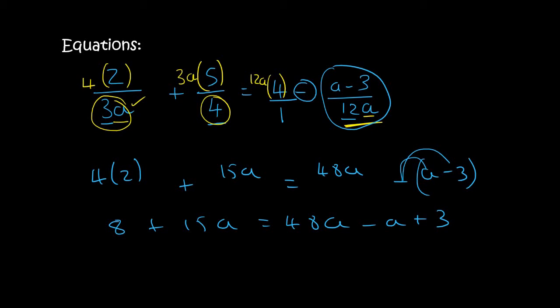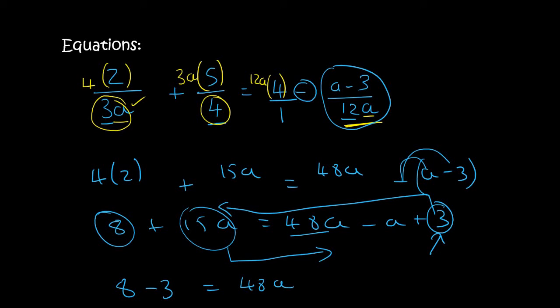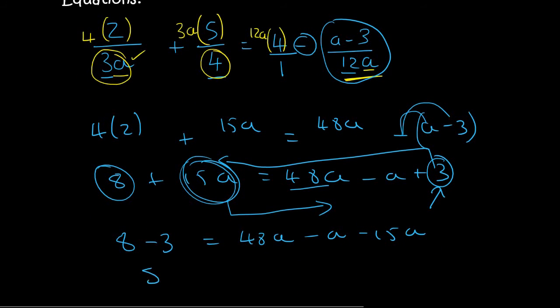Then you would solve for a. In this one, I'm actually going to take all the a's to the right and all the numbers to the left. But Kevin, why? It doesn't matter, guys. You can do it however, you will get to the same answer. So on the left, we've already got 8, and then I'm going to bring this 3 over, so it becomes minus 3. Here I've got 48a minus a, and then I'm going to bring this 15a over, so it'll become minus 15a. And so we're going to end up with 5 equals 32a.